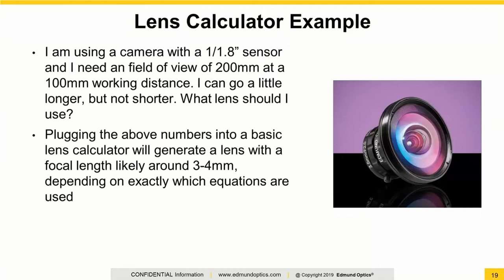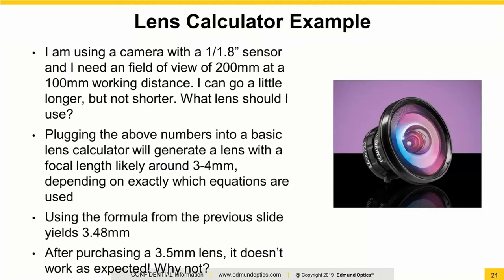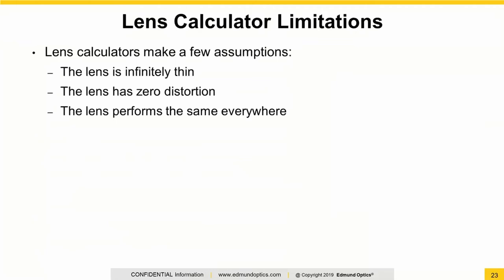When we plug those numbers into the basic formula or one of the calculators, we get a number somewhere between 3 or 4 millimeters for the focal length. Basically the way these work is they're just taking the angular field of view of the triangle created from the front point of that 100 millimeters out to the edges of the object, which gives you a focal length — in this case, 3.48 millimeters. That isn't taking everything into account and we can have some problems. After you purchase that sort of product and bring in a 3.5 millimeter lens, you might find it's not working as expected. In this scenario, you actually get a field of view that's significantly larger than the 200 millimeters you wanted.